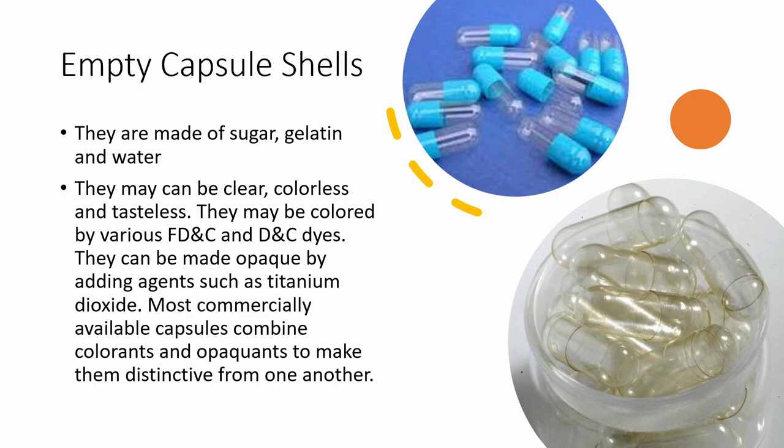Capsule shells can be clear, colorless, or tasteless, and they may be colored by various FD&C and D&C dyes. The colorants used in gelatin capsules should be safe for human consumption. They can be made opaque by adding agents such as titanium oxide. Most commercially available capsules combine colorants and opacants to make them distinctive from one another.